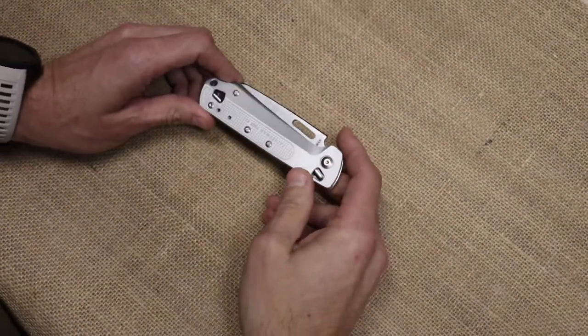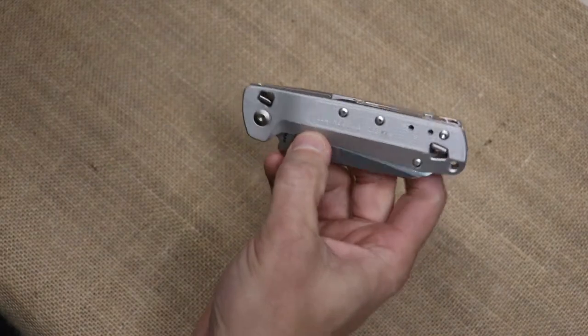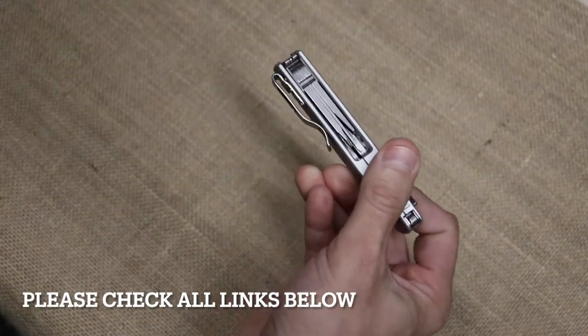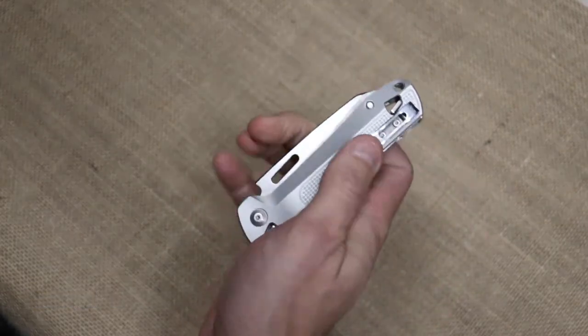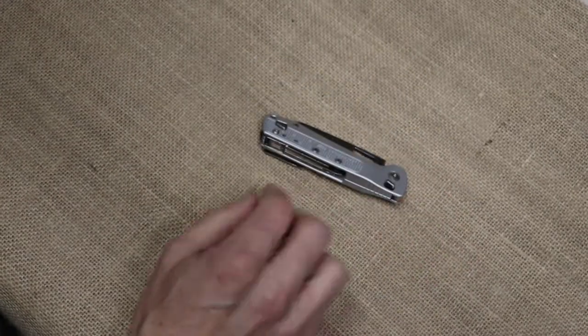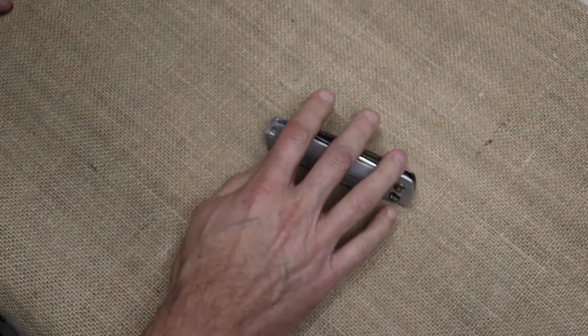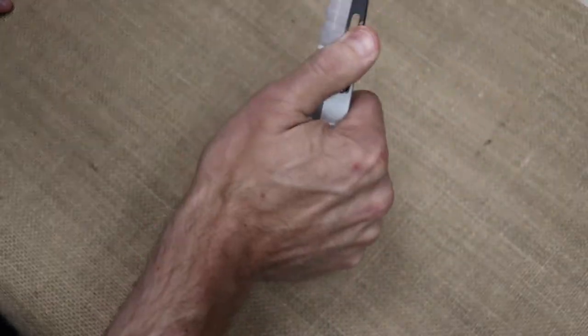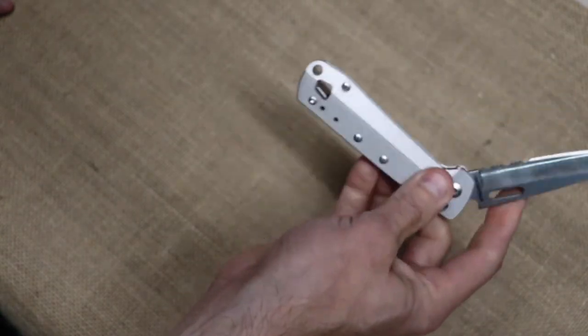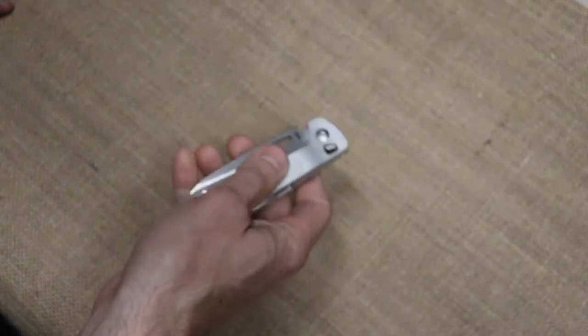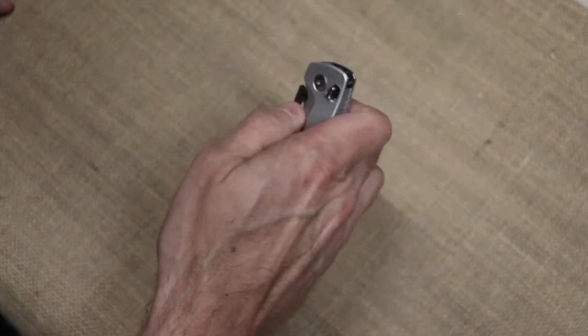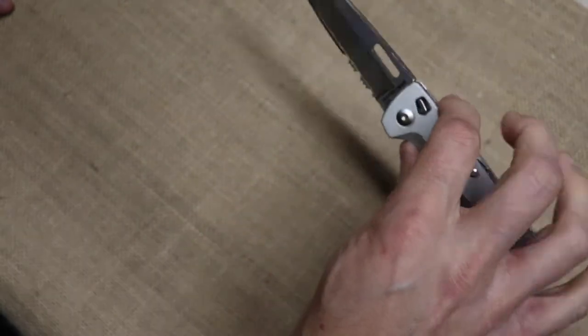Alright, let's get into the Leatherman Free K2. I've always been kind of interested in their Free series of blades and was wondering what they were like. I got this at the end of the other day, so I thought, well, here we go, we get to play with it. Closed length is 4.5 inches. Blade length itself is 3.3. The weight on it is 4.9 ounces. Your blade steel, I believe, is a 420HC stainless.